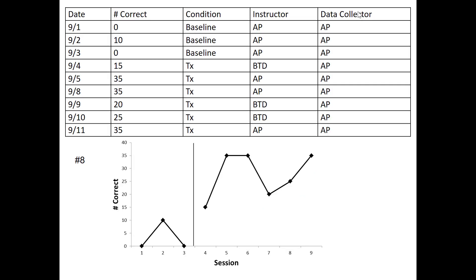Graph number eight — name the threat. What we see here also involves instructor and data collector, with some variance between the two. We may have a threat of procedural fidelity, meaning the steps we're saying we're implementing as part of our intervention may be made up on the spot, altered on the spot — not showing procedural fidelity.